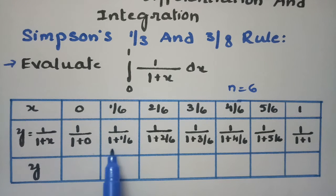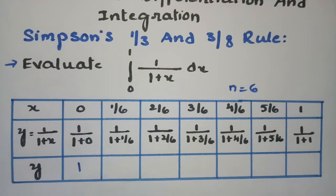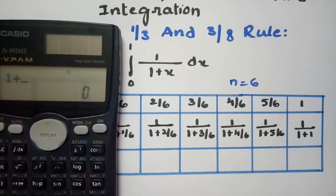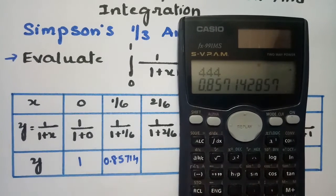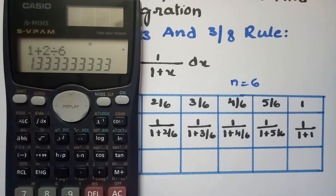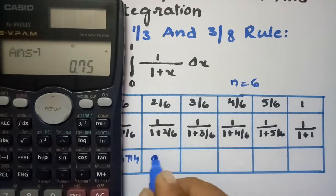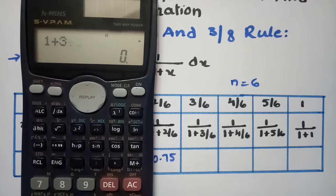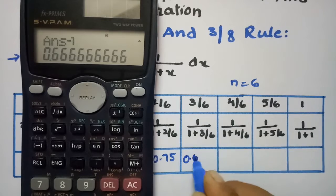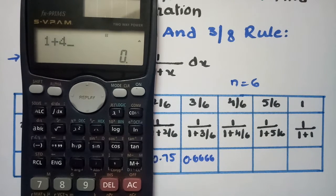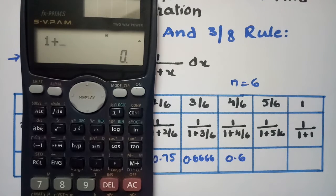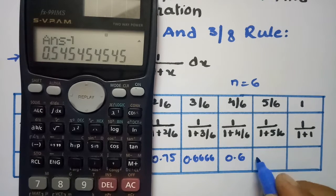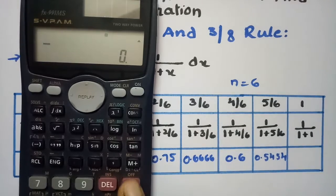Substituting x = 1/6 into 1/(1+x) gives 1/(1 + 1/6) = 0.85714. The next one, x = 2/6, gives 0.75. Then x = 3/6 gives 0.6666. Next, x = 4/6 gives 0.6. Then x = 5/6 gives 0.5454.